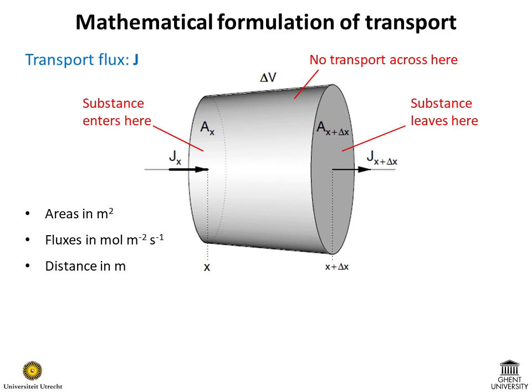We assume that the substance enters or leaves the volume only through the front and back faces. We denote the location of the front face by x, its area by Ax, and the transport flux perpendicular to this area by Jx. Similarly, we denote the location of the back face by x plus delta x, its area by Ax plus delta x, and the corresponding transport flux by Jx plus delta x.